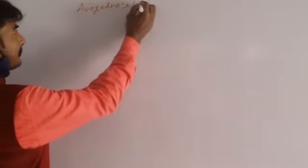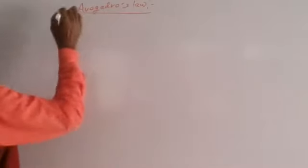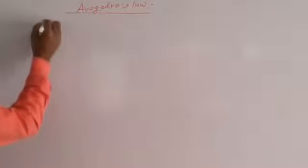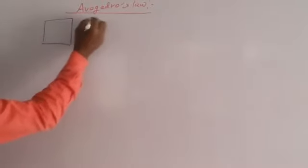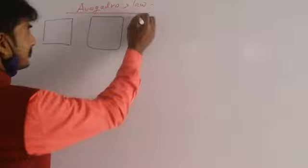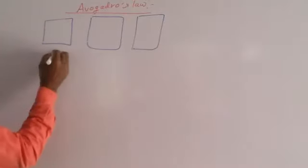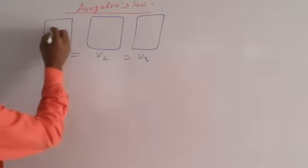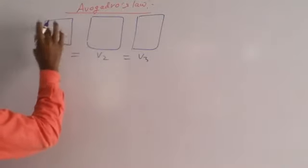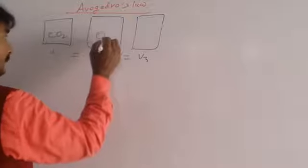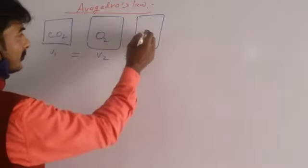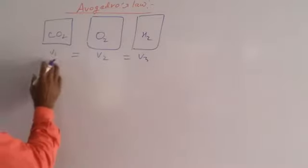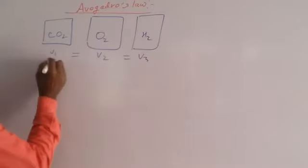Avogadro Law, how do you understand? One container, three containers are there. V1 which is equal to V2 which is equal to V3. It contains carbon dioxide gas, oxygen gas, and hydrogen gas. Different gases are there, but volumes are same.